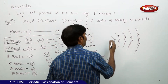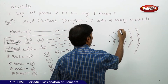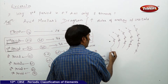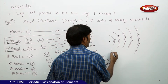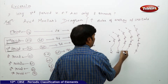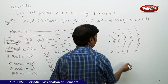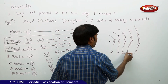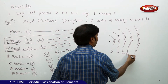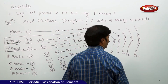So for the first shell, the number of electrons is 2. For the second shell it is 8 electrons. For the third shell it is 18 electrons. For the fourth shell it is 32 electrons, and for the fifth shell it is greater than 32 electrons.